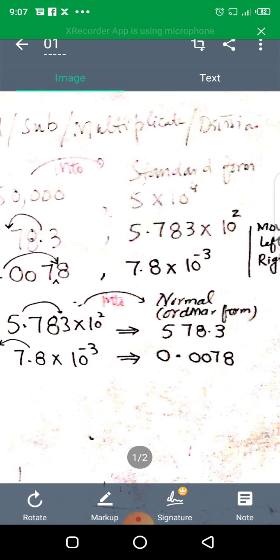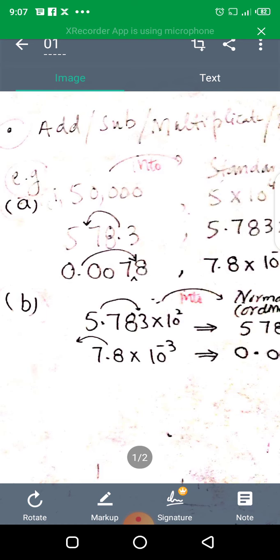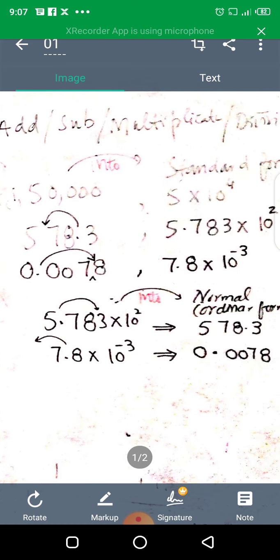So that will be 578.3. Two digits, then the power will be two. Next one is 7.8 multiply by ten raised to power minus three.